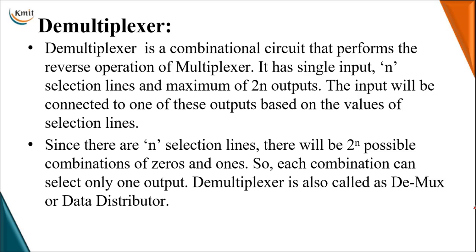It will have a maximum of 2^n number of outputs. If it has 2^n number of outputs with a single input, in order to distribute that single input through 2^n outputs, we require control signals called selection inputs. For 2^n output lines, we require n number of selection lines.